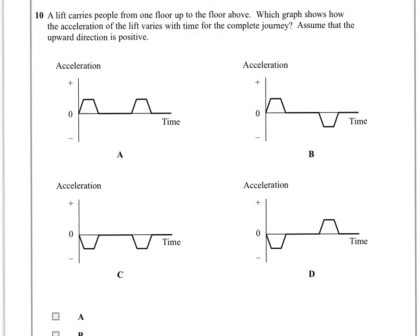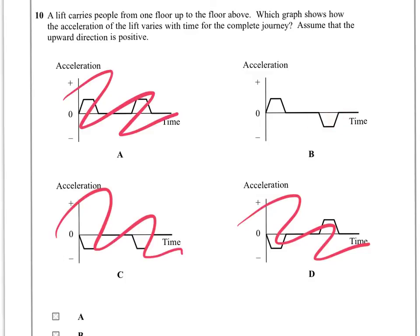Question 10. A lift carries people from one floor up to the floor above. Which graph shows how the acceleration of the lift varies with time for the complete journey? Assume that the upward direction is positive. So to get going, the lift will have to have an upward acceleration, so we're looking for something that begins with an upward acceleration, so we can rule these two out. Then we just recognise that, as well as something to get it going in the upward direction, there will need to be something that opposes upward motion to get it to slow down and stop. And so the first one then can be ruled out, and that leaves us with B.